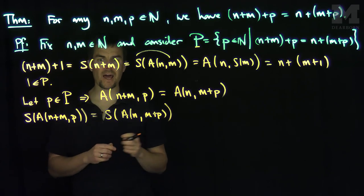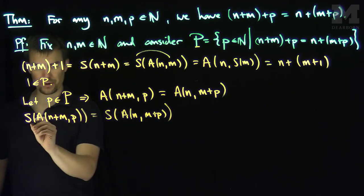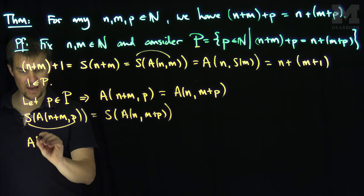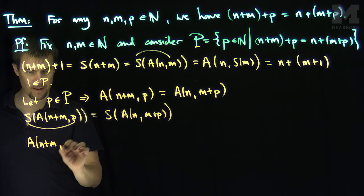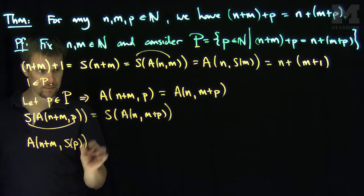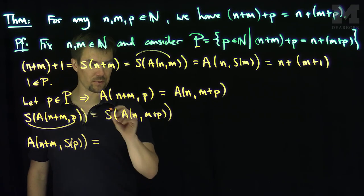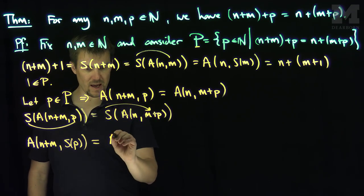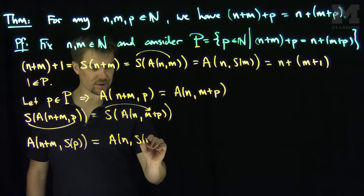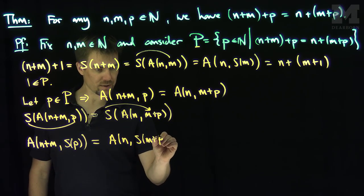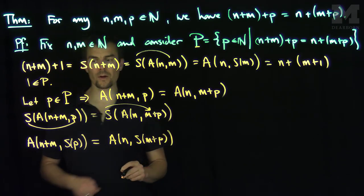Now let's unpack this and see what this tells us. I can put this over here. I can put the successor on p. So this says that A(n+m, S(p)) is equal to what? Is equal to—well what will this thing be over here? I'll put the successor over here. So this is going to be A(n, S(m+p)).